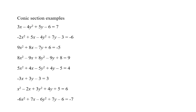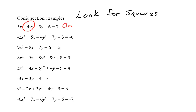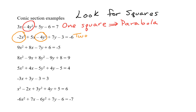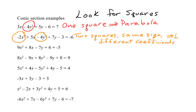Here are a few examples. In each case, we look for the squares to determine what type of conic section the equation represents. The first equation has only one term involving the square of a variable, minus 4y squared. With one squared term, this equation represents a parabola. The second equation has two terms with squares of variables, negative 2x squared and minus 4y squared. These two square terms have the same sign — both are negative — but the coefficients are different, negative 2 and negative 4. So this is an ellipse.